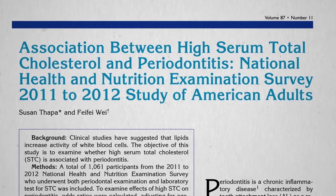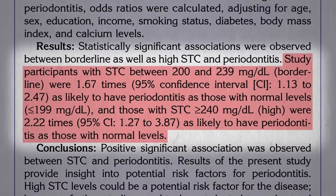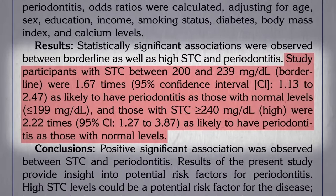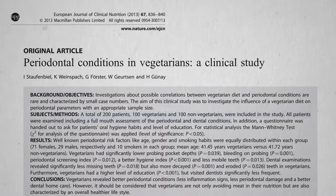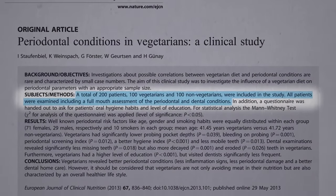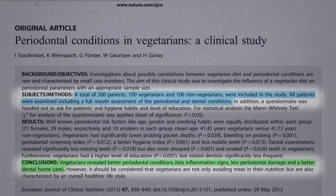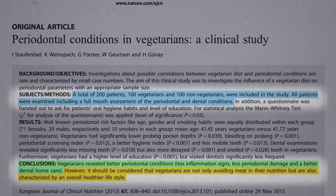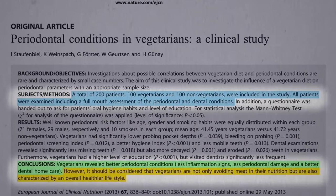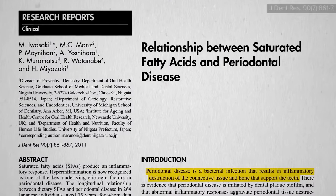If not, it would be hard to implicate saturated fat — but there does appear to be a link. Those with high cholesterol do appear to have up to double the risk. What about periodontal conditions in vegetarians? A hundred vegetarians versus non-vegetarians were studied, and those eating vegetarian did have better periodontal conditions: less inflammation signs, less periodontal damage, and better dental home care. However, it should be considered that vegetarians may not just be avoiding meat, but are healthier in other ways, like better dental home care.